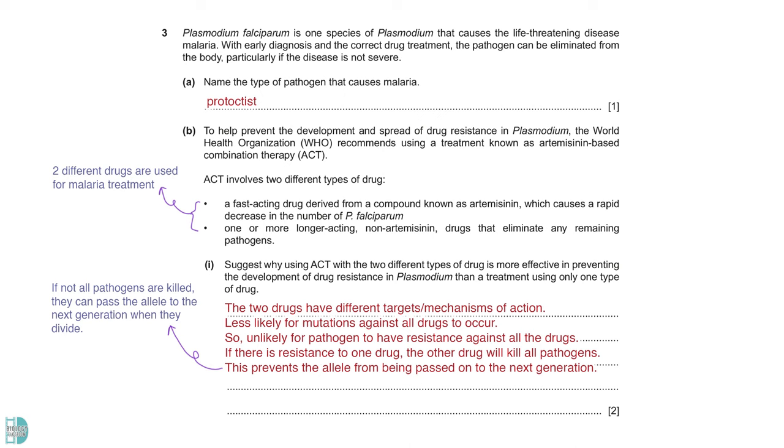There is an AVP mark for any valid and reasonable suggestion. For example, you can say that if we keep the number of the pathogen low in the body, there is less possibility of mutations arising.